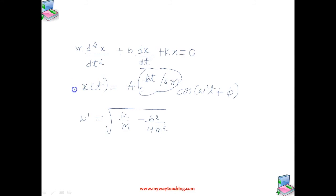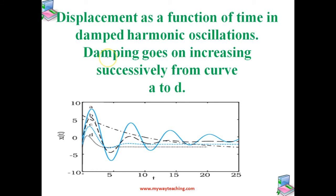The solution for this X of T equation is represented graphically as you can see here, as a cosine function whose amplitude is given by A e raised to minus BT by 2M, and it gradually decreases with time.